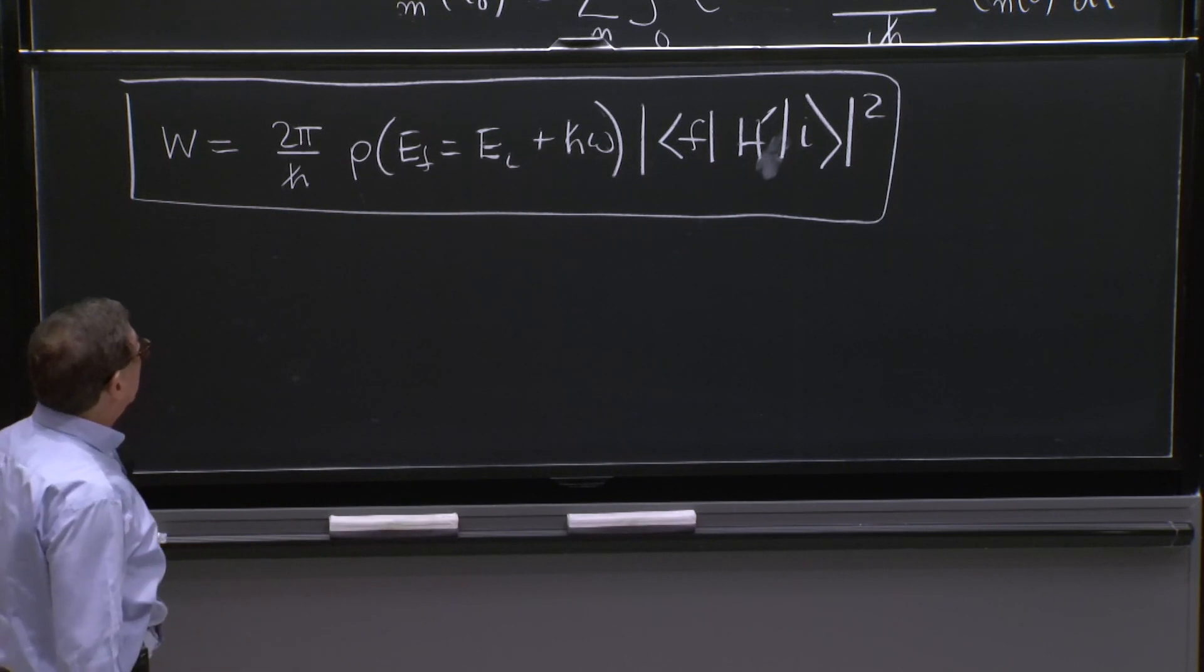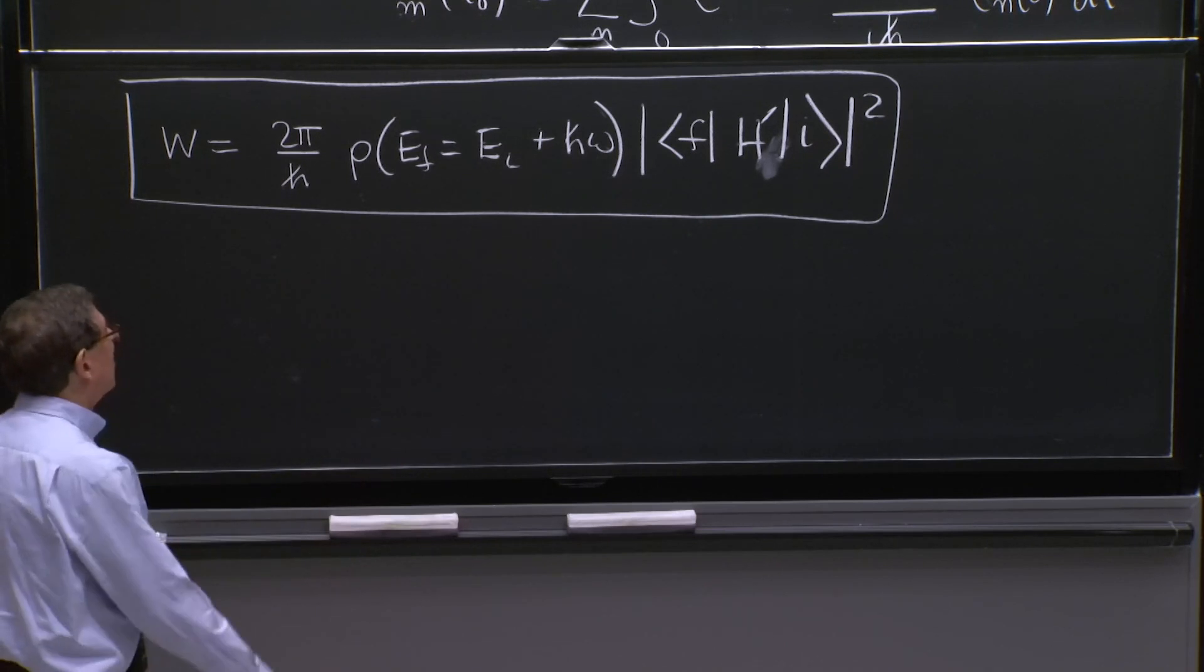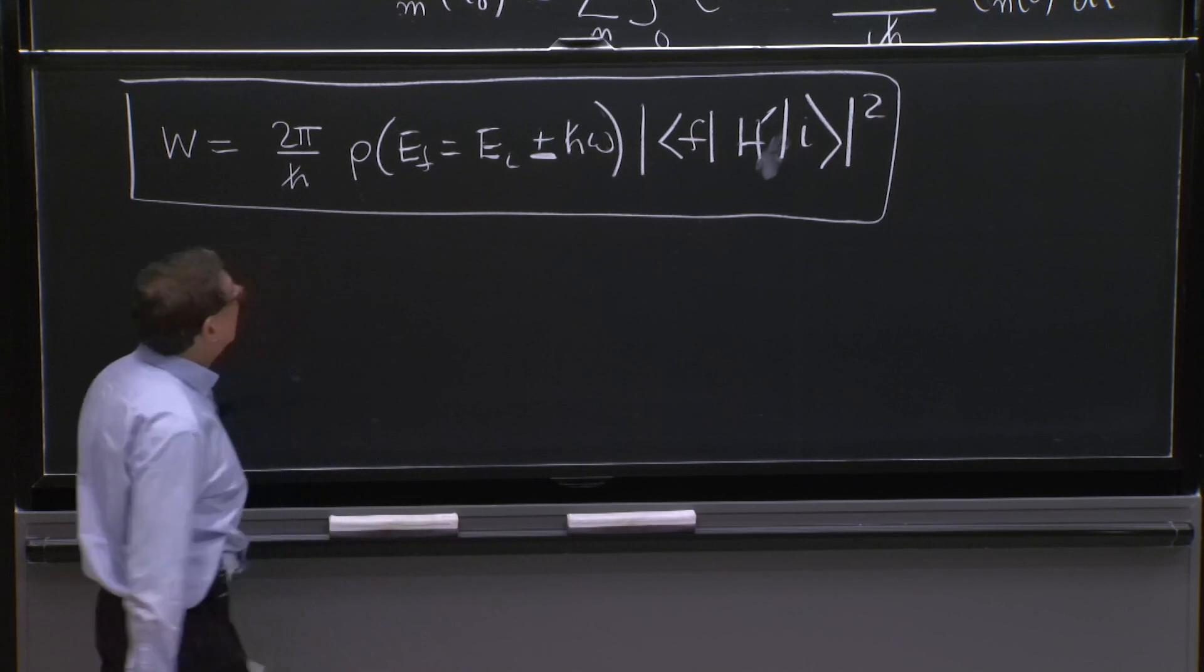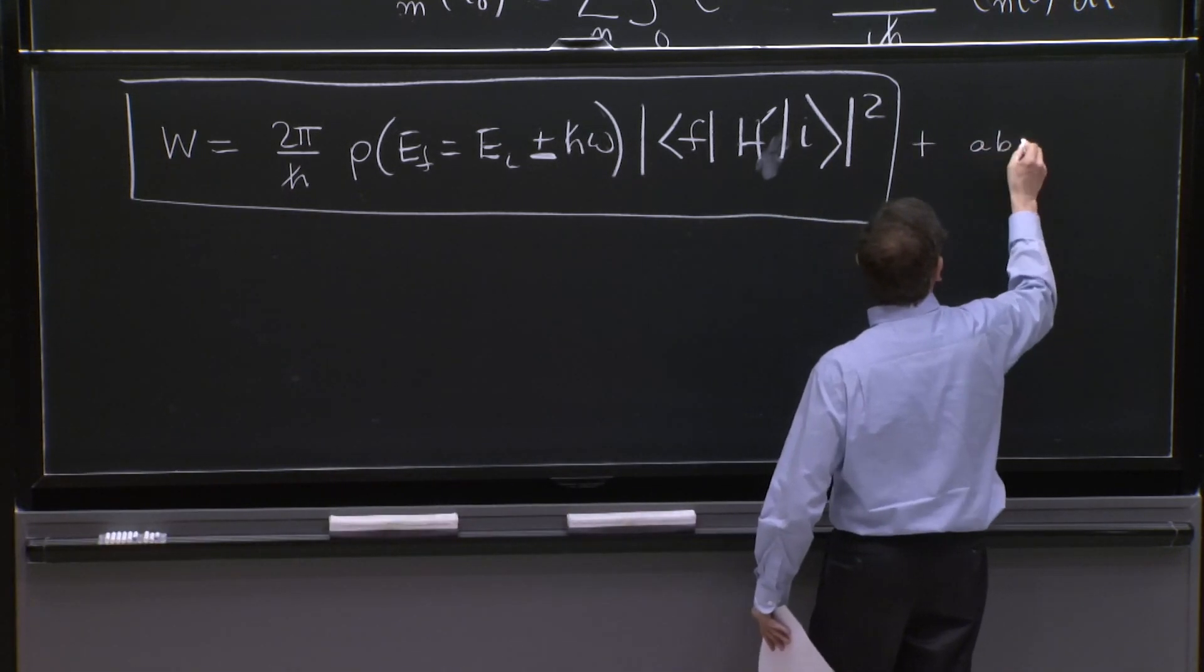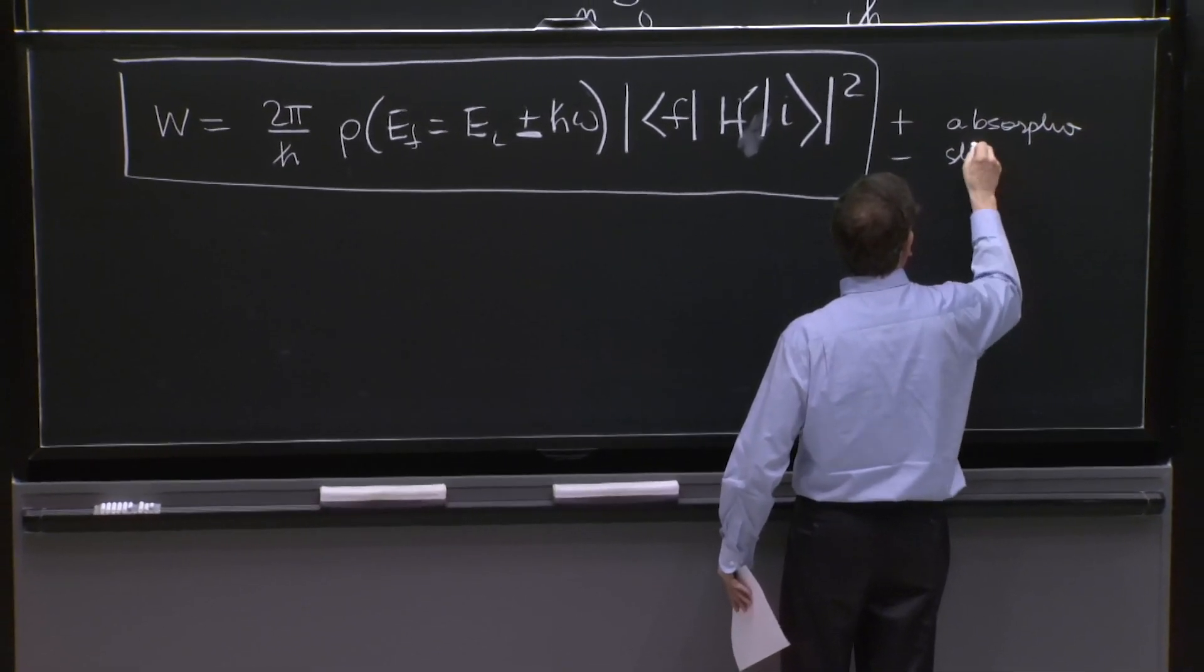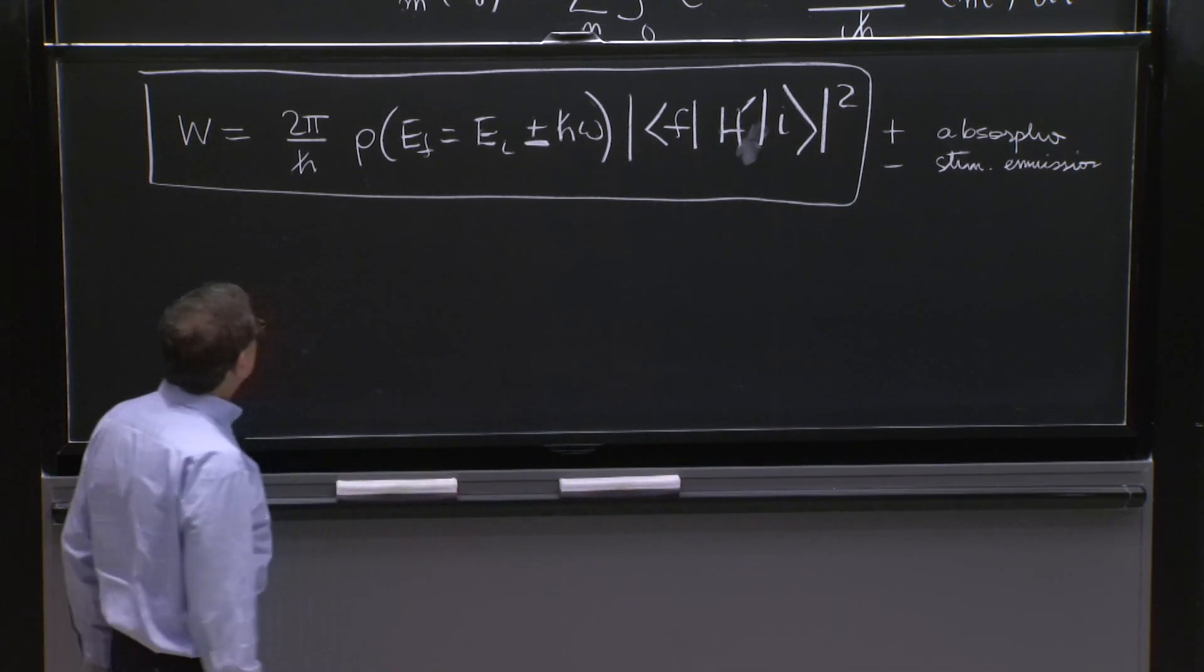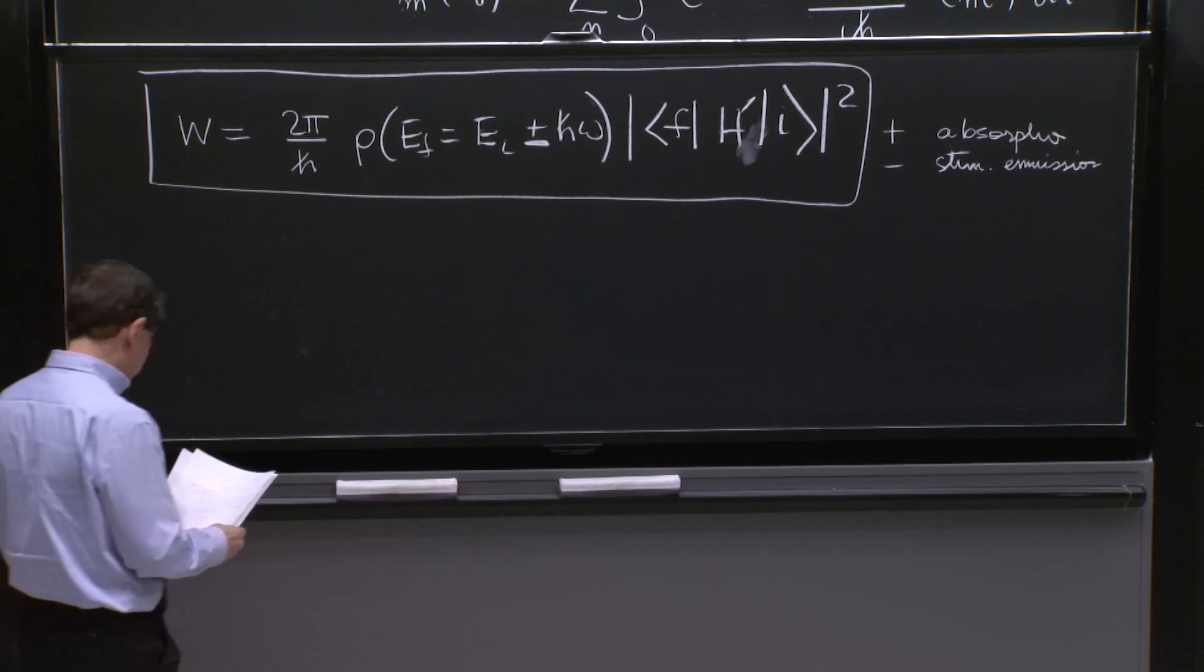But stimulated emission, the calculation is completely analogous. So the end result for stimulated emission is just minus h omega. The final energy now is this one. So the top sign plus is for absorption, minus for stimulated emission.